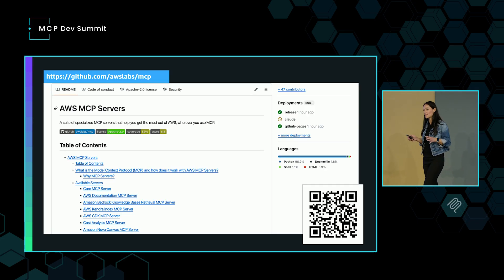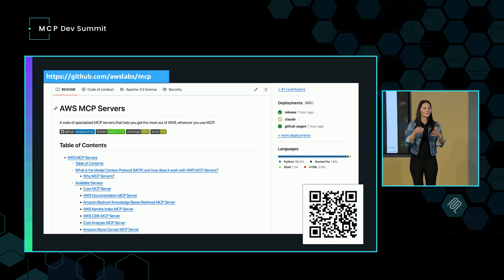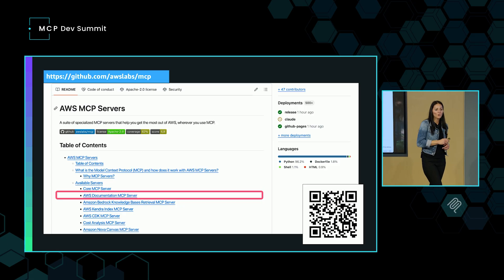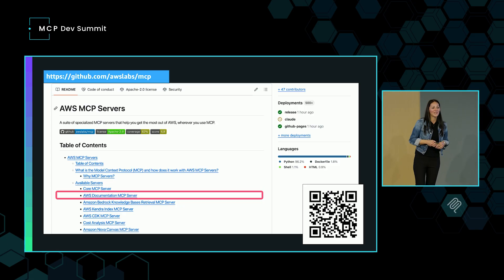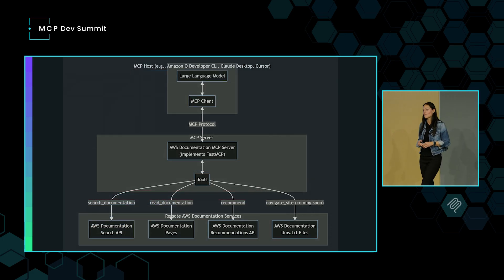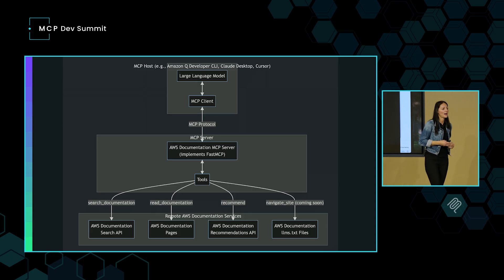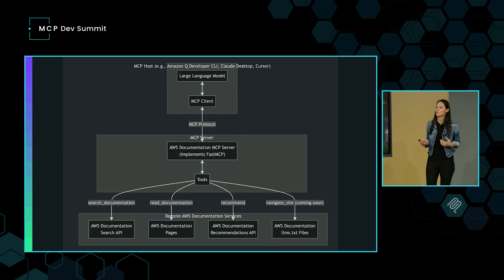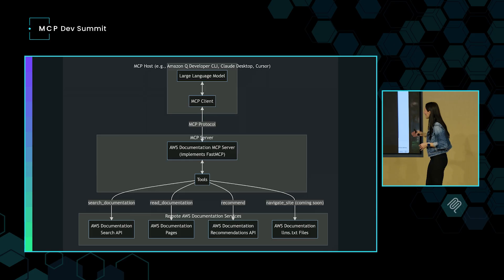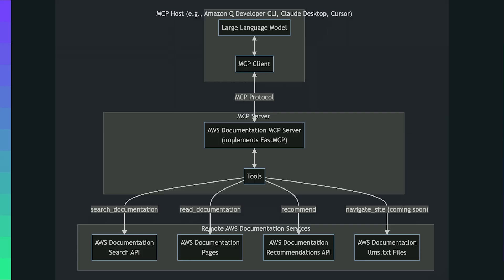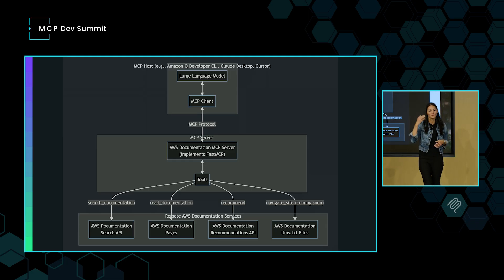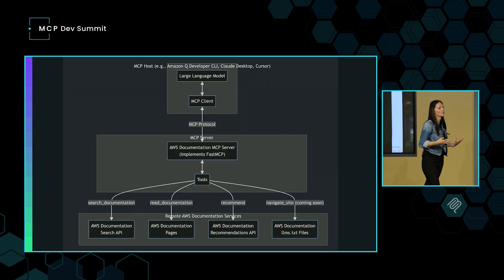A lot of those MCP servers started out with standard IO, as probably the majority of us started building. I want to show one example here, which is our AWS documentation MCP server. This shows how you can easily get started by taking existing public APIs that you might already have and just wrapping them as an MCP server. Our documentation team at Amazon did exactly this — they used our publicly available APIs for documentation search, pages, recommendations, and site navigation, and wrapped that as tools exposed as this MCP server.